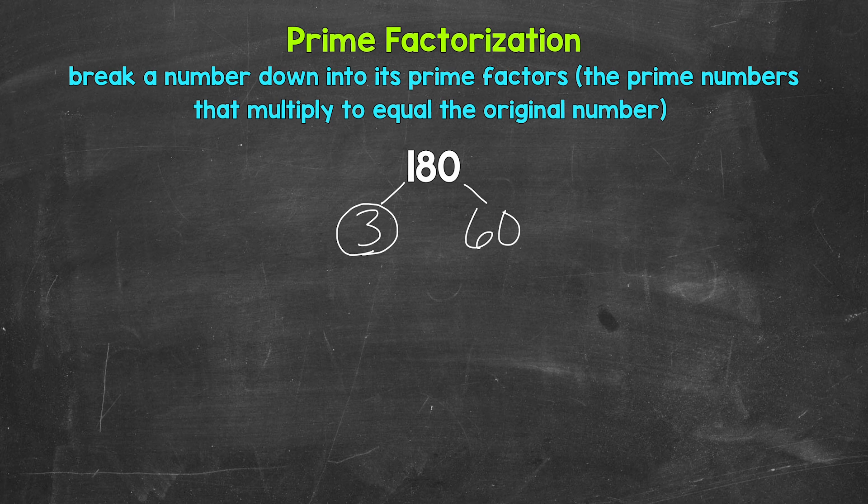60, on the other hand, is a composite number. We can break 60 down. So let's think of factors. Well, 2 and 30 are factors of 60. 2 times 30 is 60. So let's break 60 down into 2 and 30.